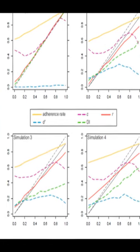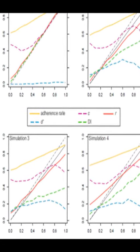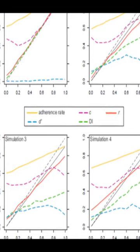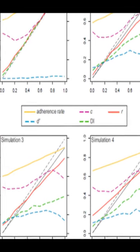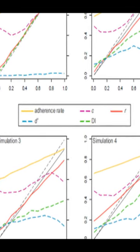The Recognition Heuristic, RH, which predicts non-compensatory reliance on recognition in comparative judgments, has been studied extensively but its application remains controversial.